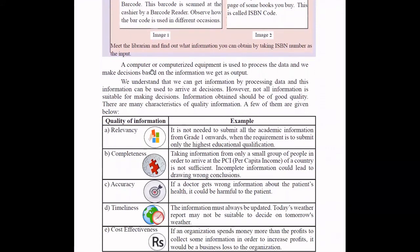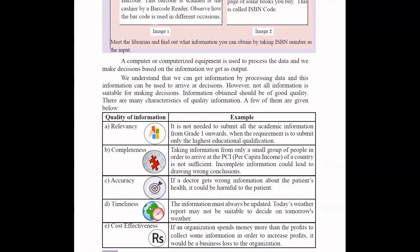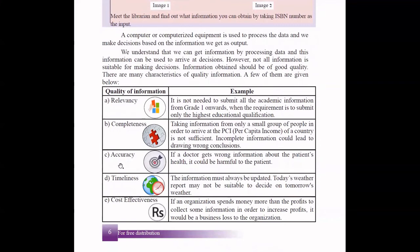The computer is actually used for this processing. It will process the data and make decisions based on the information. But sometimes just creating some information won't help you to make decisions because all information is not suitable for making decisions. The information you have should be with good quality. Quality information will have these kinds of characteristics.